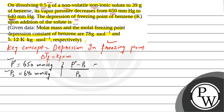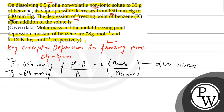This relationship — (P⁰ − Ps) / Ps = i × (number of moles of solute / number of moles of solvent) — is applied for dilute solutions, as these are colligative properties. Substituting: (650 − 640) / 640 = i × (moles of solute / moles of solvent). Since the solute is non-ionic, the van't Hoff factor i equals 1.